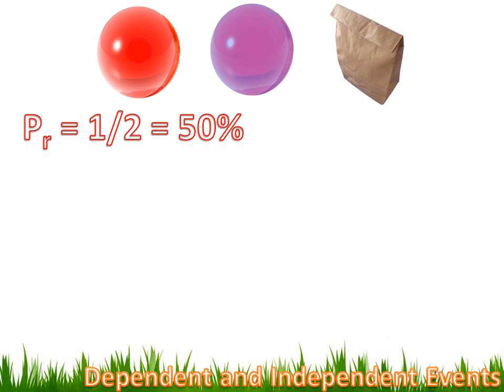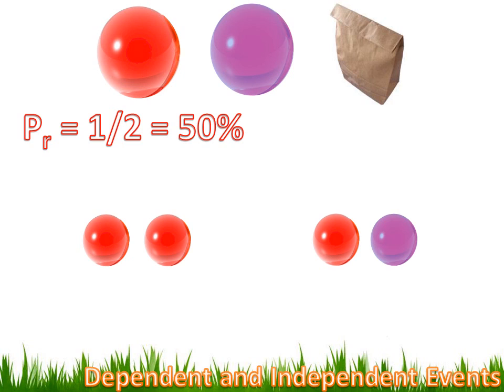Now let's play with this experiment. You're going to pull one marble, record its color, then put that marble back in the bag. I'll shake it up, and then you pull out another marble. The only way you win is if you pull a red marble on the first draw and also on the second draw. Let's think about the combinations: if the first marble was red and you put it back, the second marble could be red or purple — so you'd get red-red or red-purple.